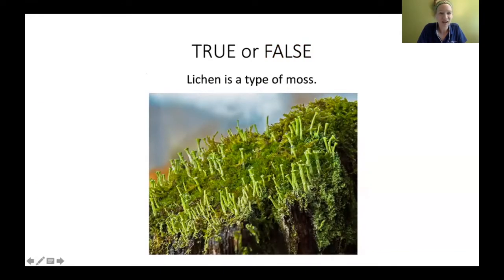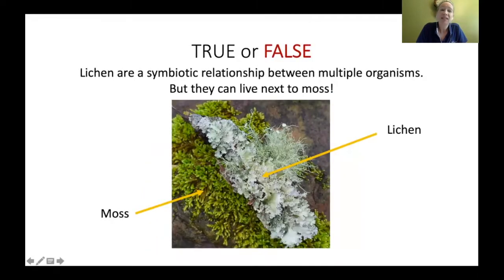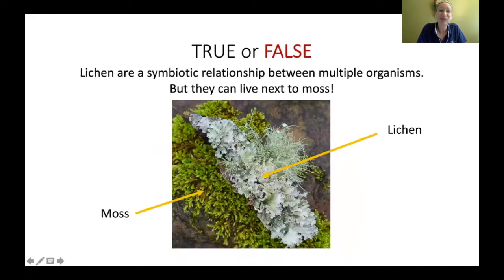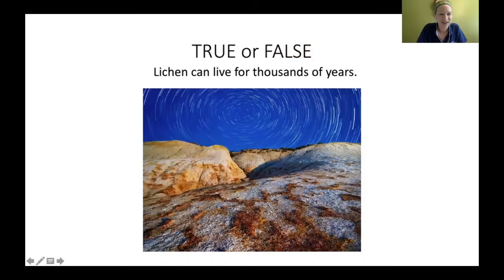Next true or false: lichen is a type of moss. Most people say false, and that's correct. Lichen is actually what they call a symbiotic relationship — a beneficial relationship between multiple organisms. We'll go over what those organisms are shortly. Lichen and moss often live right next to each other and can be similar colors, which is why people confuse them.